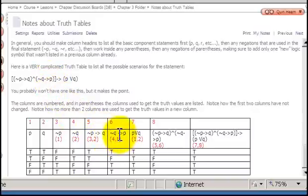Again, notice the negation of q was already taken care of in another column. In column 6, the only new logic symbol we have to deal with is the arrow.